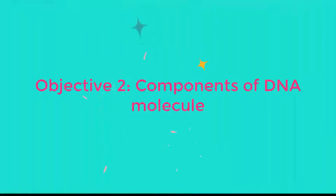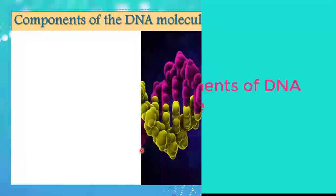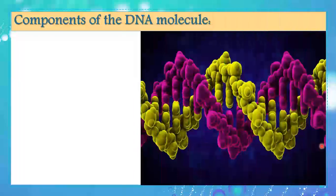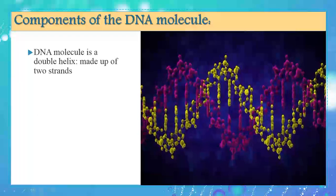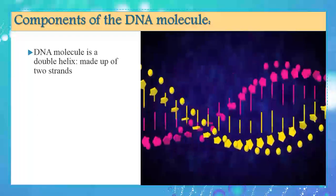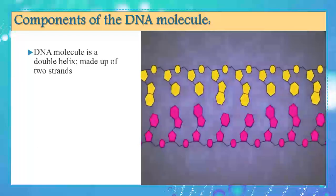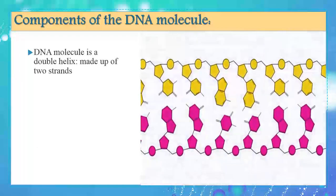Now let's address our second objective by describing the components of the DNA molecule. What is exactly inside this DNA? Looking at this DNA molecule, you can see it is made up of two strands — one in purple and the other in yellow — and those two strands have a helix shape. So we can say that the DNA molecule is a double helix made up of two strands.